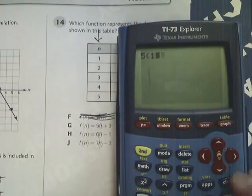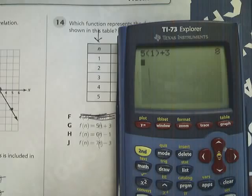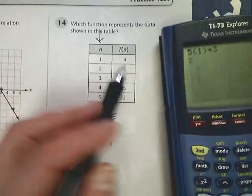G, I do 5 times 1 plus 3. That gives me 8, but it's supposed to give me 4, so that's out.